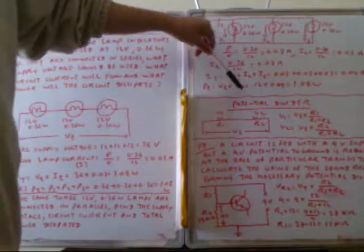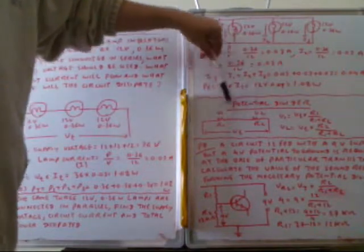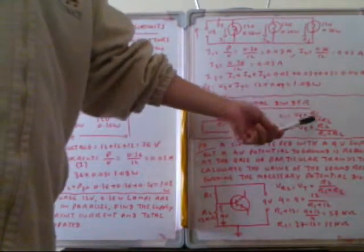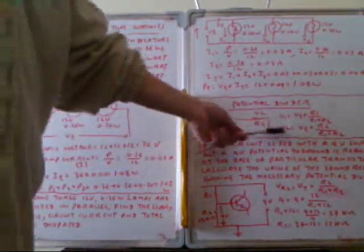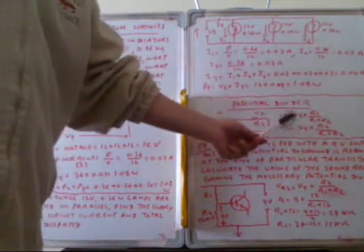Now we see a voltage divider with R1 and R2 in series. V1 across R1 can be calculated as V_T × R1/(R1+R2). V2 across R2 can be calculated as V_T × R2/(R1+R2). This is how we calculate V1 and V2 in a voltage divider.